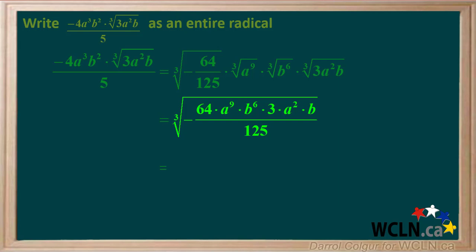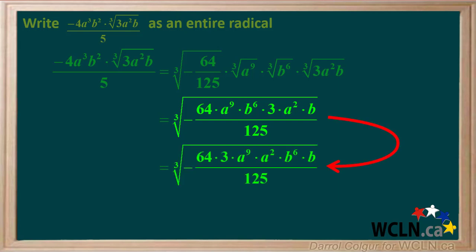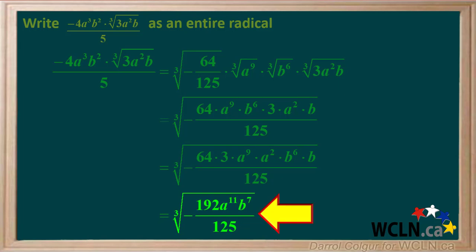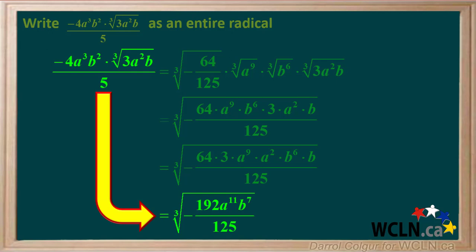We'll rearrange so the numbers are together and the variables are together. 64 times 3 equals 192. a to the 9th times a squared equals a to the 11th. b to the 6th times b equals b to the 7th. We'll keep the 125 in the denominator. Now we're left with this expression where everything is included in a single radical. 125 does not divide evenly into 192, so 192 over 125 cannot be simplified. Note that the negative sign has been carried down. So the expression is combined to form an entire radical.